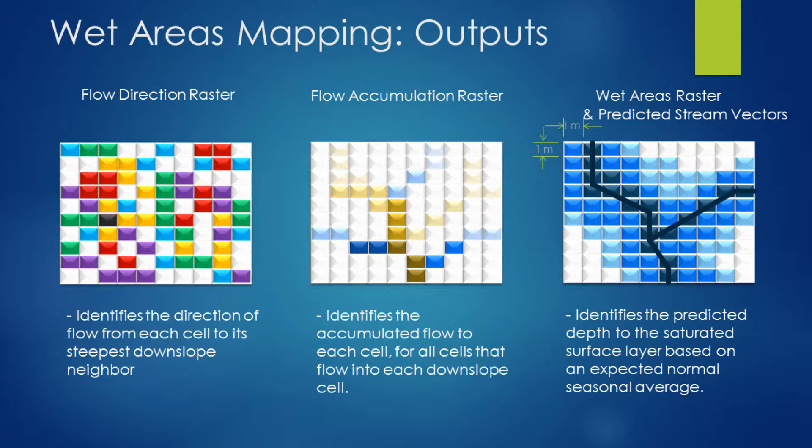Finally, we have the wet areas rasters, as well as the predicted stream channel vectors. These identify those channel locations or open water features that we would predict to exist across the landscape.